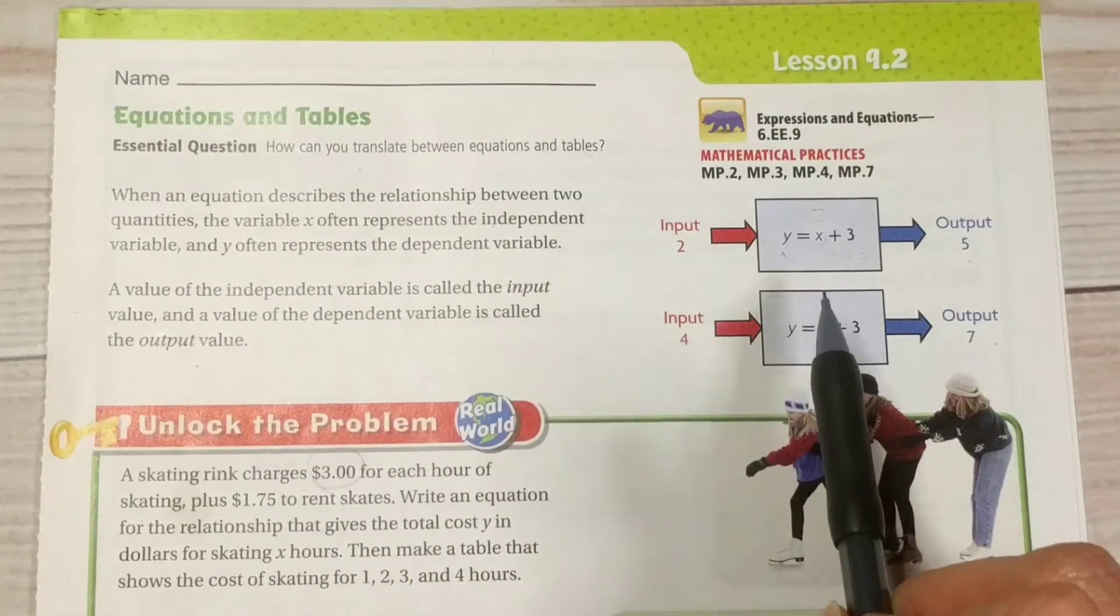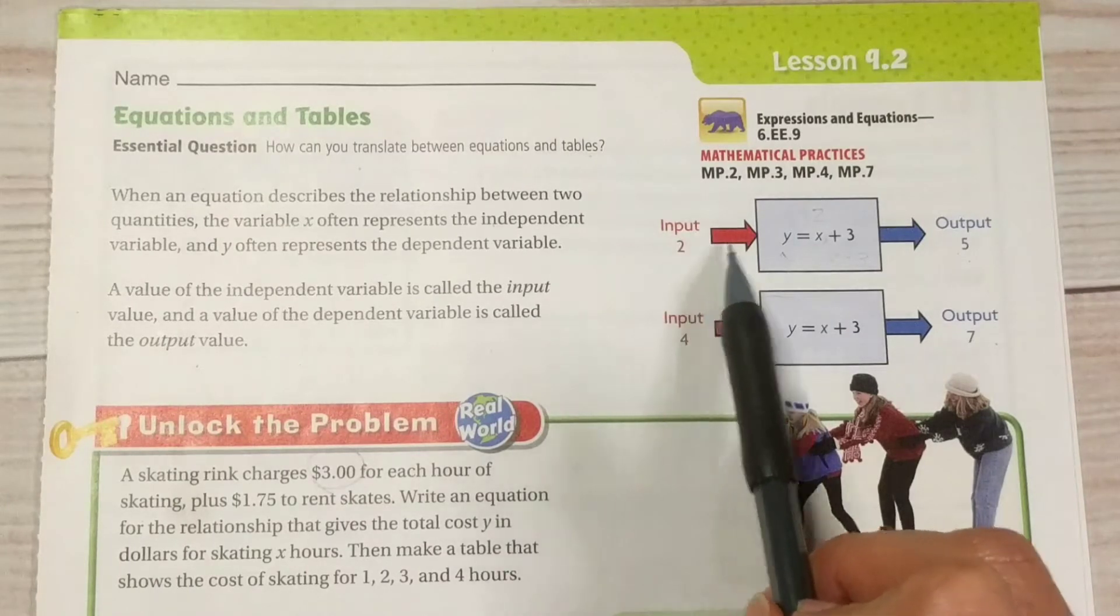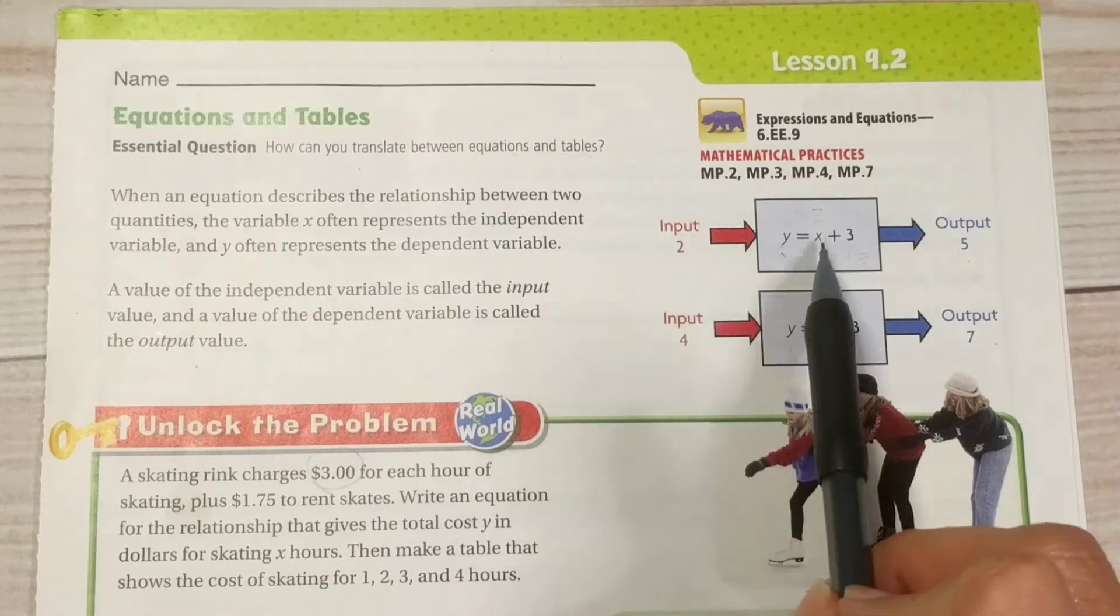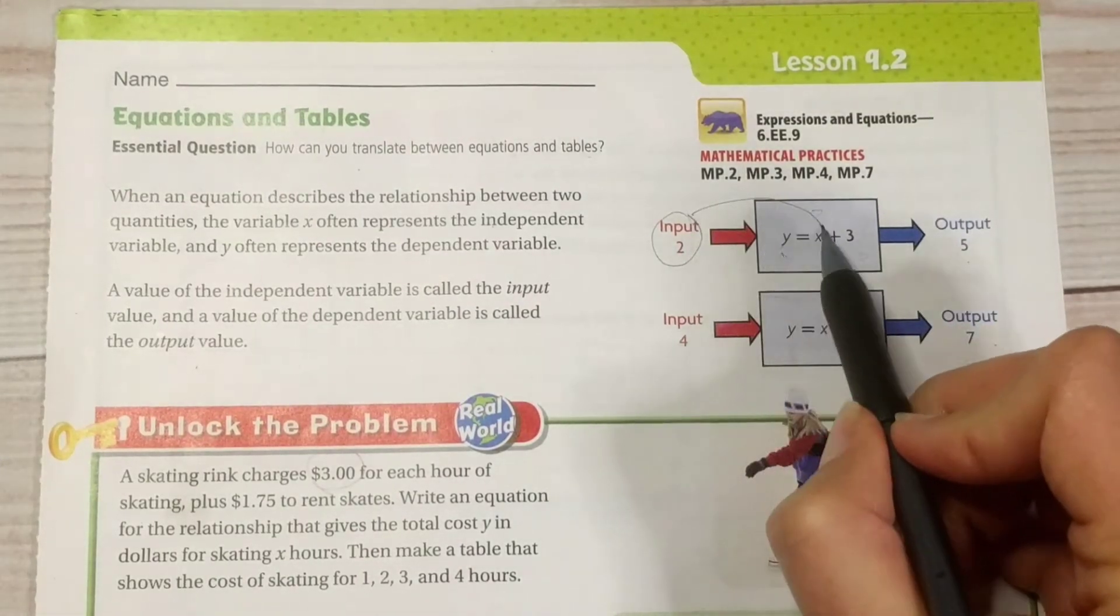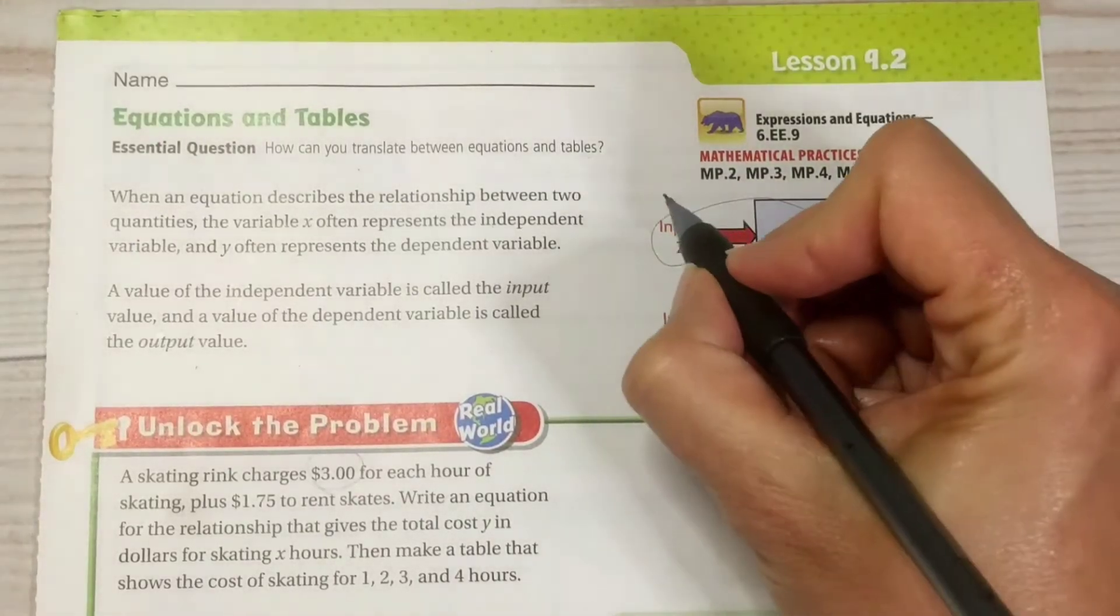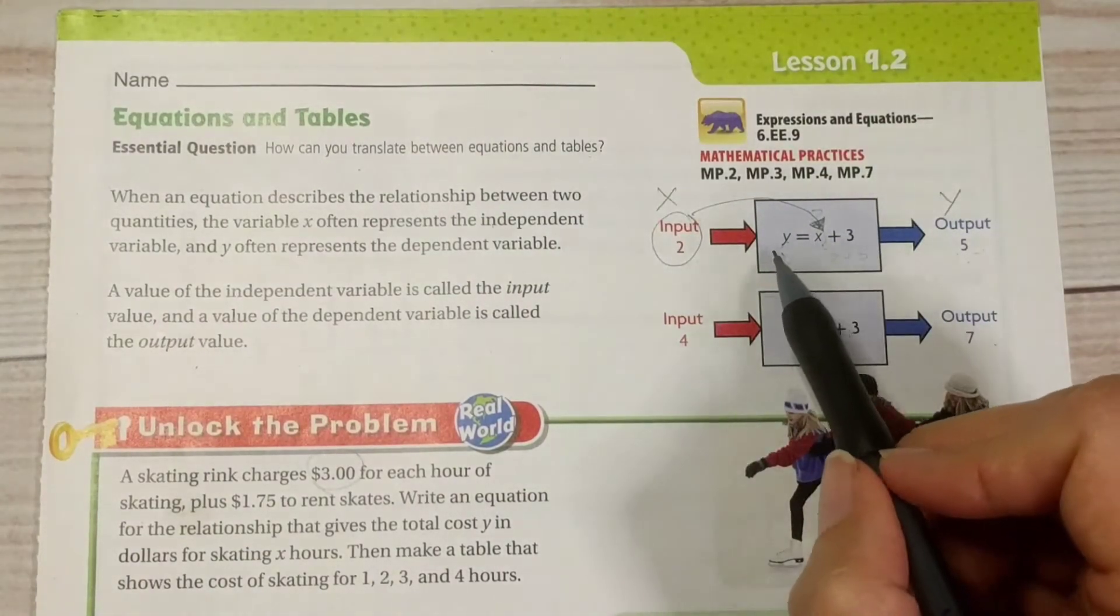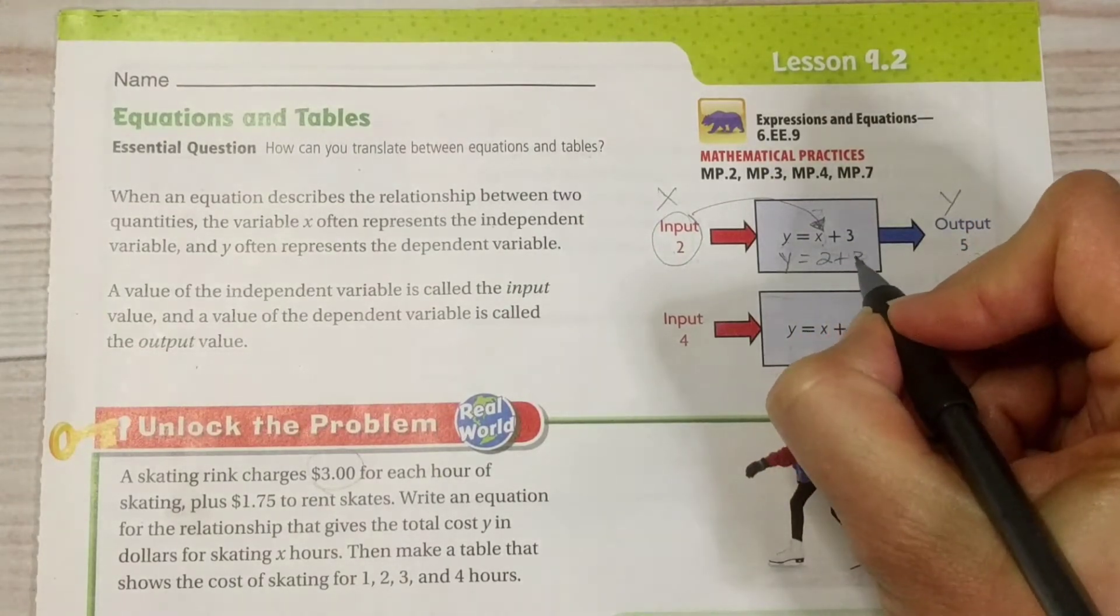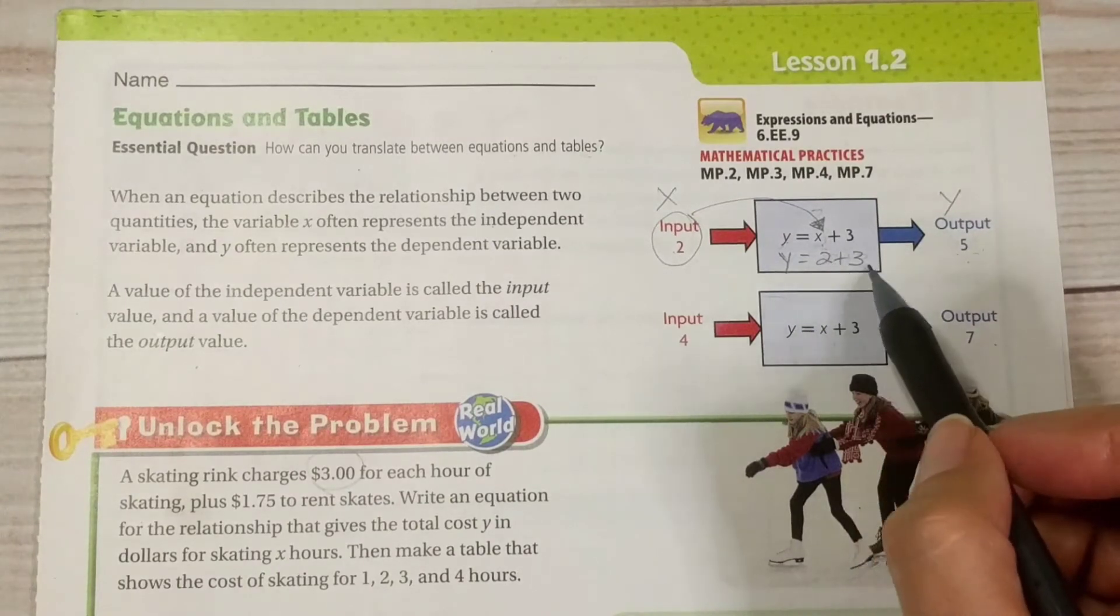Let's take a quick look at this over on the side. When we have two variables and we input a value for the x, so if we take this two and we input that two for x, then we can solve for y, which is our output. So this is our x, this is our y. So when we put two in for x, then we have y equals two plus three. Well, now we can figure out what y is. It's five, right? Two plus three is five. There's our output.